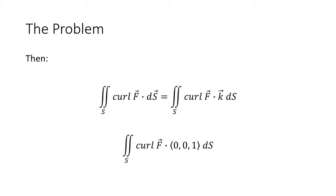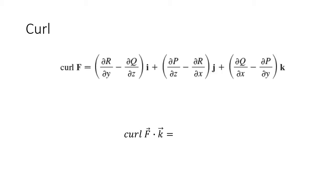We know that k-hat is really the unit vector (0, 0, 1). Instead of calculating the entire curl, when I dot it with k-hat, the first component of k-hat is 0, so 0 times the first component goes away. The second component is also 0, so that goes away too. And 1 times my third component means it's just that third component. So the curl of F dot k-hat is just the partial of Q with respect to x minus the partial of P with respect to y.